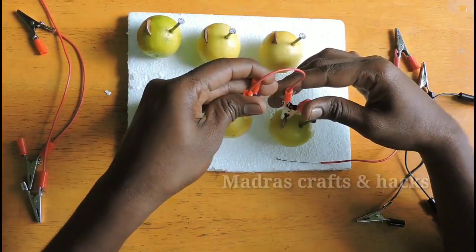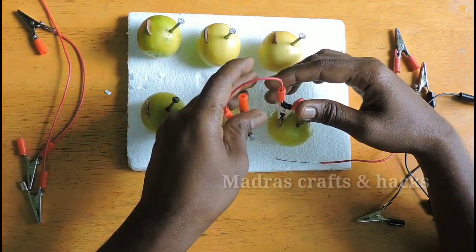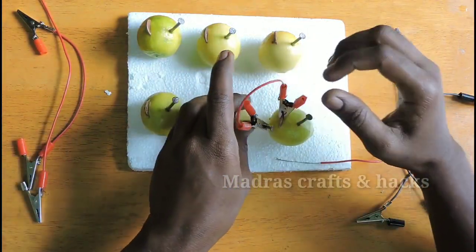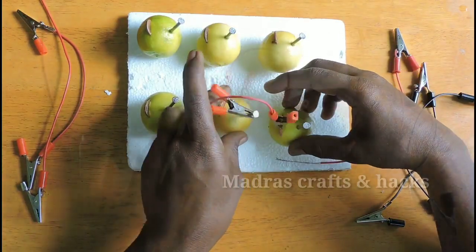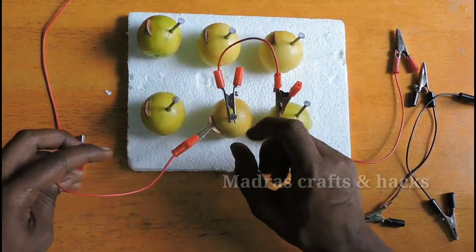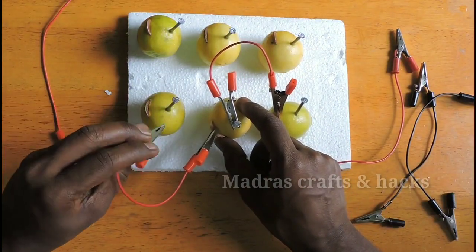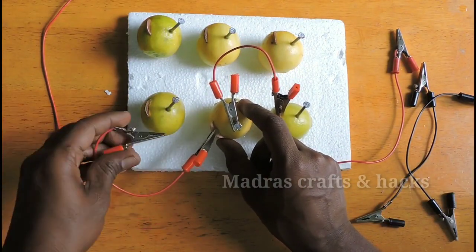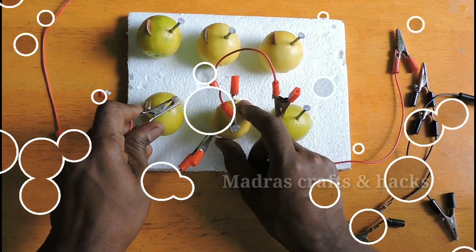Next, we will connect all the lemons in series. We will connect the copper coin of the first lemon to the galvanized nail of the second lemon. Like that, connect the copper coin of the second lemon to the galvanized nail of the third lemon, and connect all the lemons in series.